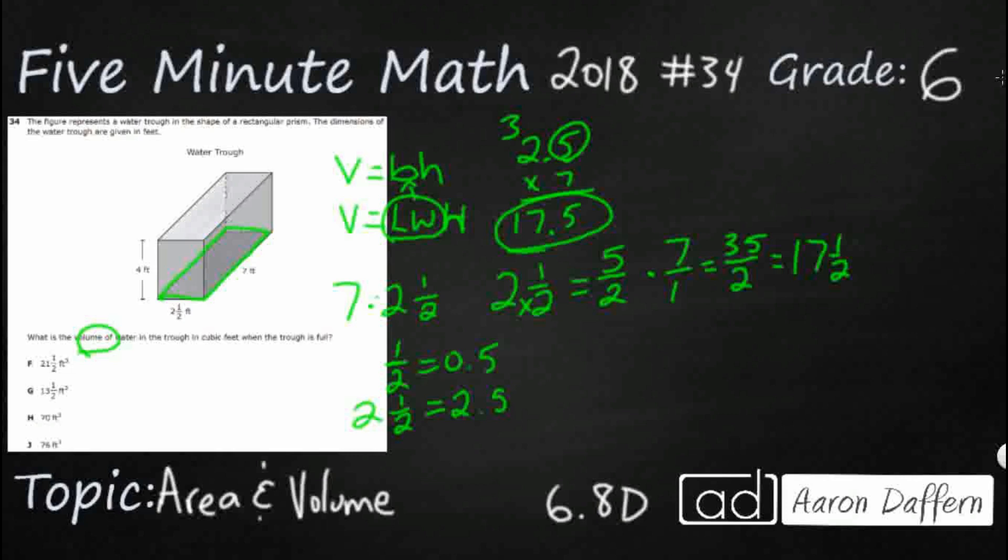Either way, we now have the area of the base, 17.5, and that's feet squared. Next, we simply need to multiply by our height. So we're going to say volume equals base, which is 17.5 feet squared. It's feet squared because we've already multiplied feet twice, the 7 and the 2 and a half, times this 4.